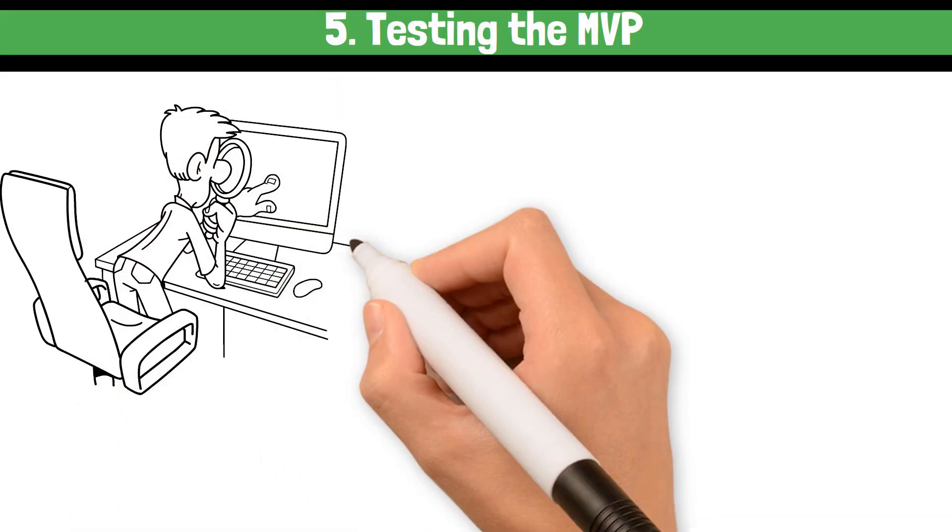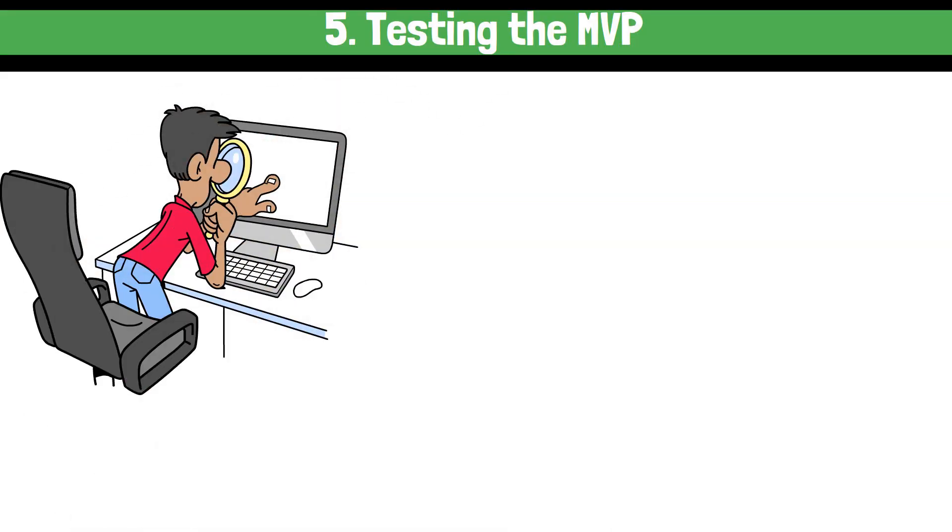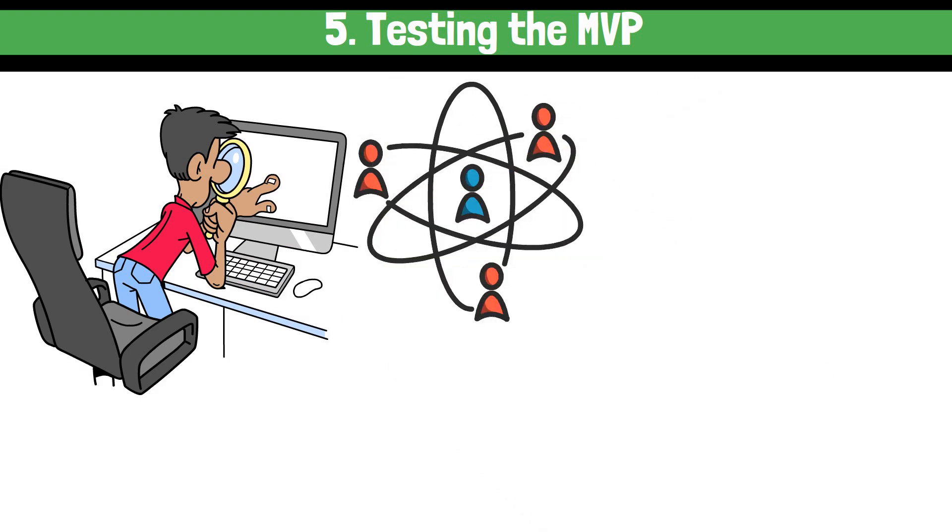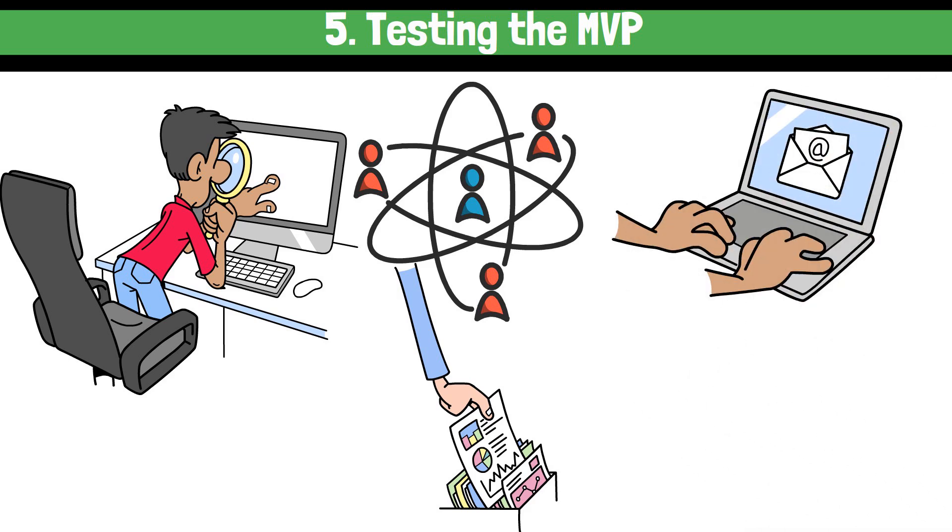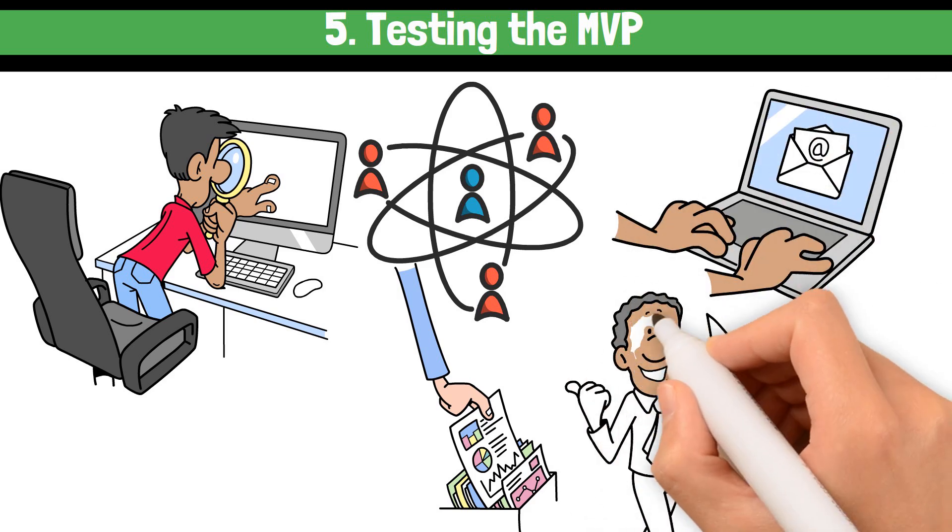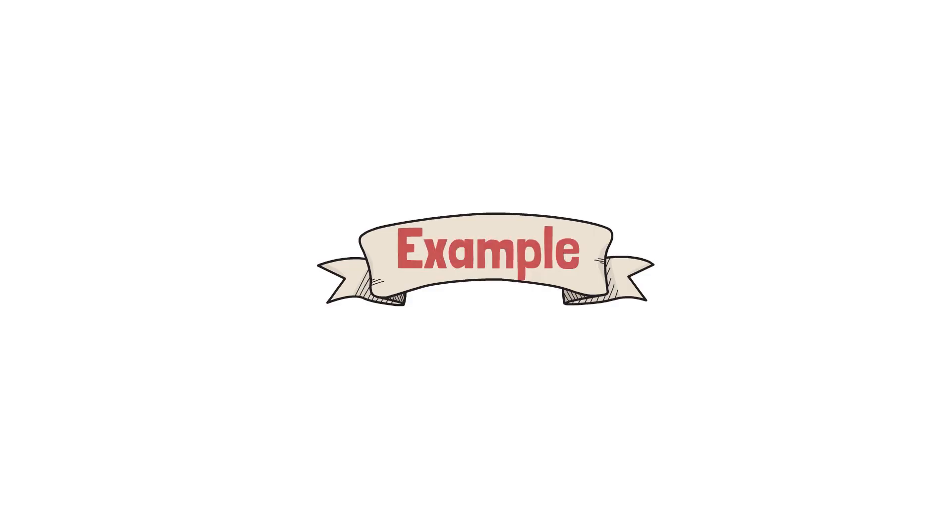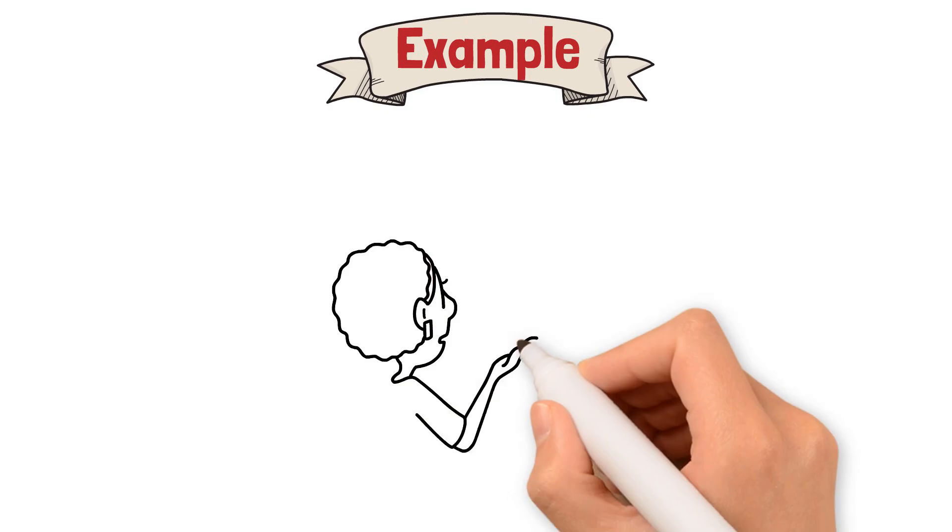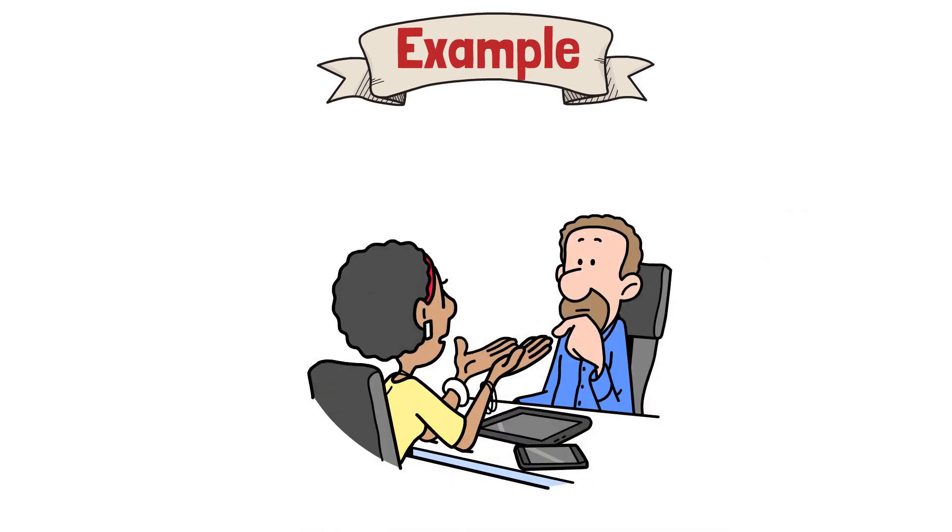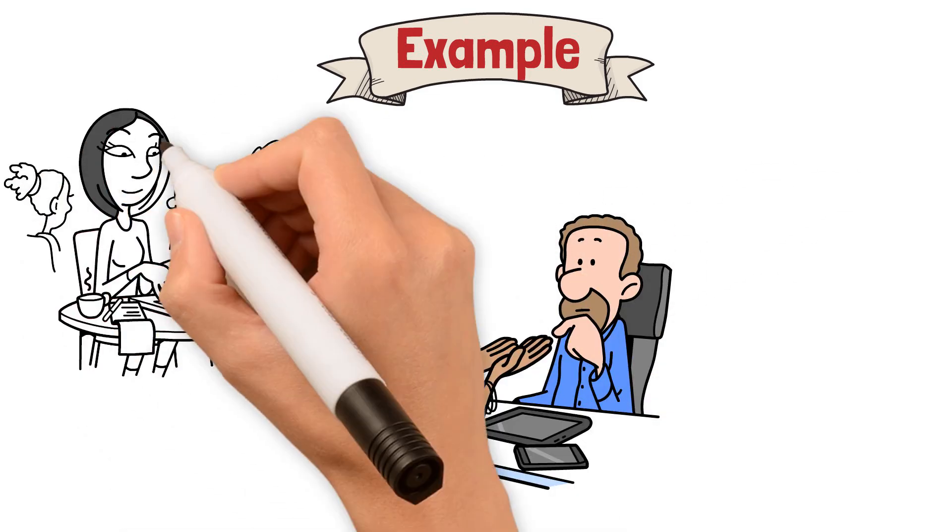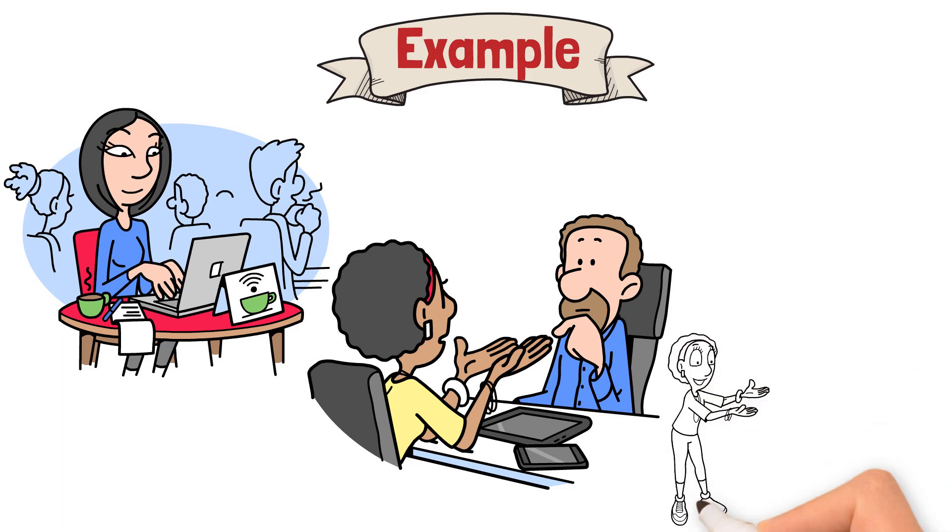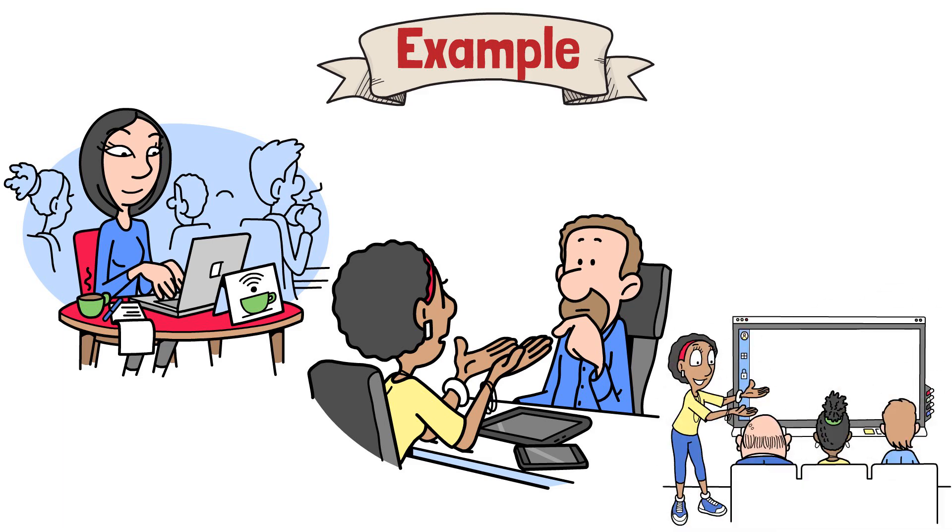After building the MVP, the next step is testing. Share it with a small group of target users, collect their feedback, and use that feedback to iterate. Remember, the goal is to learn, not to create a perfect product on the first try. Example: A startup testing a language-learning MVP might discover through user feedback that short, interactive lessons are preferred over lengthy ones. This insight can guide future development.